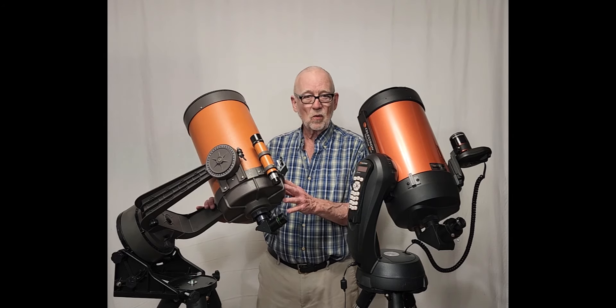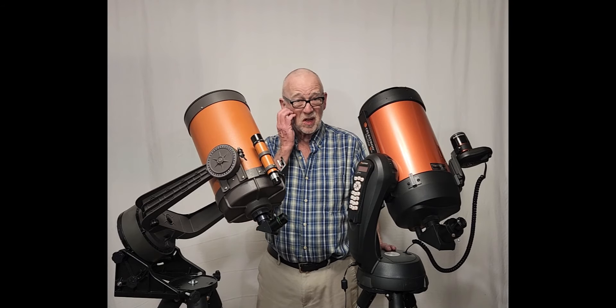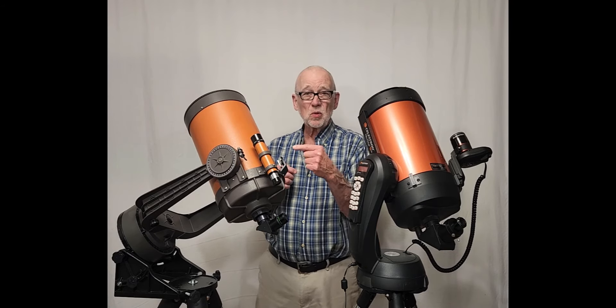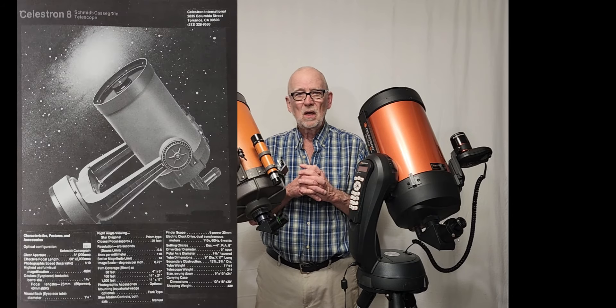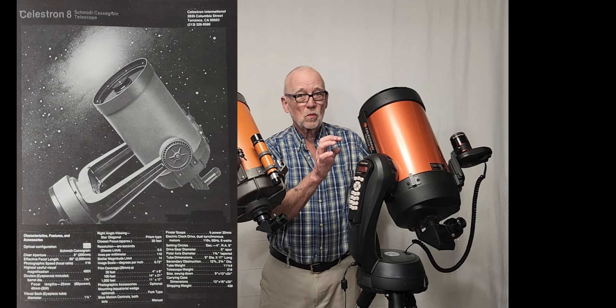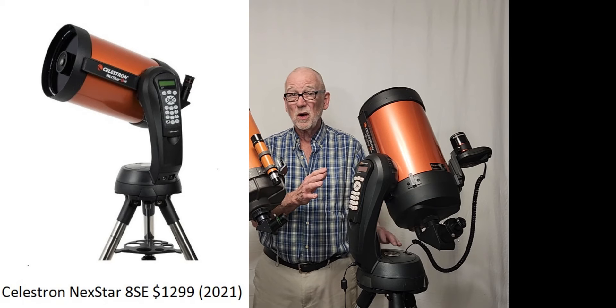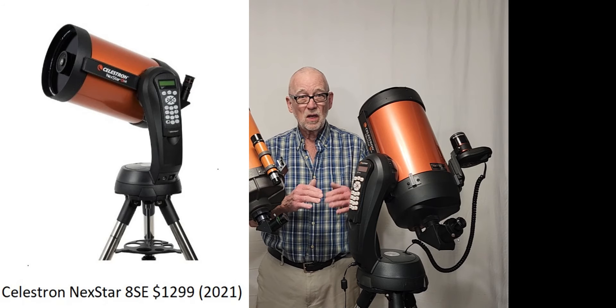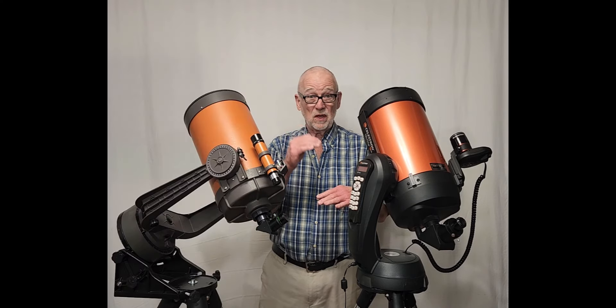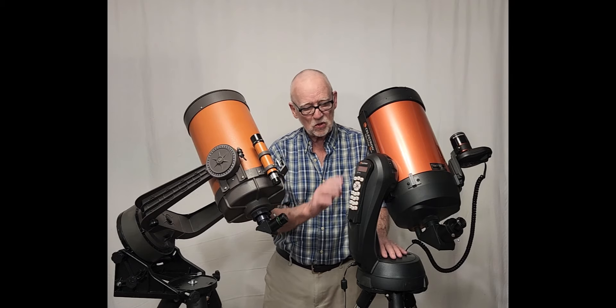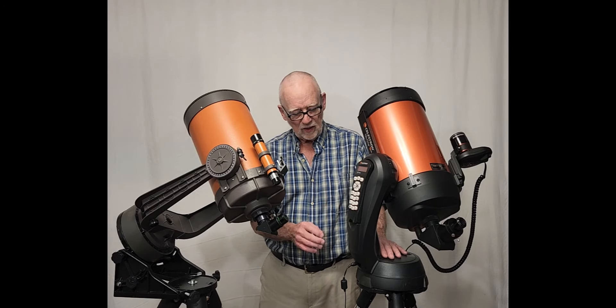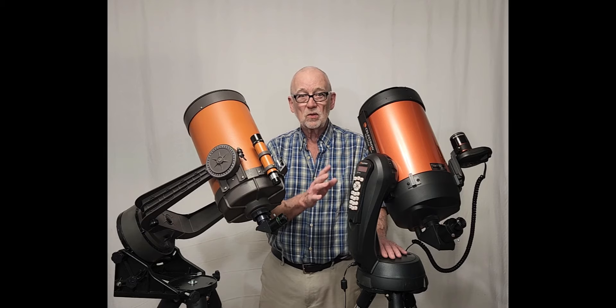This has a fork equatorial mount. This has a single arm fork Altaz mount. When this one was new it sold for less than a thousand dollars. This one is about twelve hundred. This was as of a couple years ago so the price has not kept up with inflation. It also has quite a bit of difference in terms of the functionality.